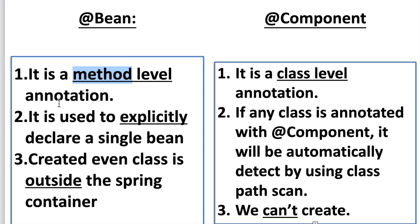Bean annotation is a method level annotation whereas Component is a class level annotation. It is used to explicitly declare a single bean rather than letting Spring do it automatically. Whereas if any class is annotated with Component, it will automatically detect it by the class path.